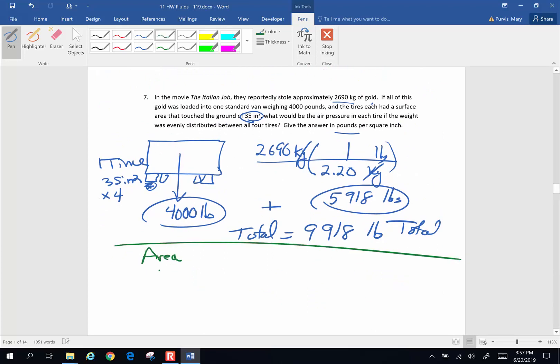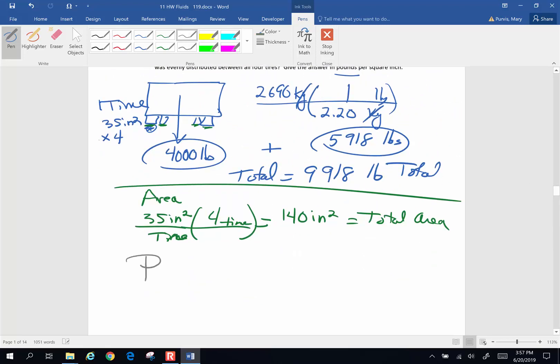So when it comes to area, I've got 35 inches squared per tire, and I have four tires. So when I multiply by four, I'm going to end up with 140 square inches of actual rubber touching the ground. That's going to be my total area. And I want to know the pressure exerted downward by the weight of the van and the gold in each tire. Pressure is force divided by area. I'm going to take the total force in pounds, total area in inches, 9,918 pounds, 140 inches squared.